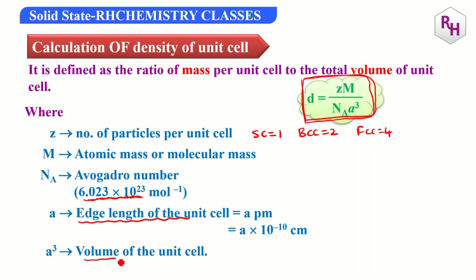Here, A cube is the volume of the unit cell. The important point is that density is in grams per cm cube.